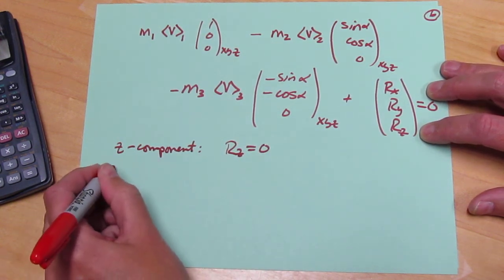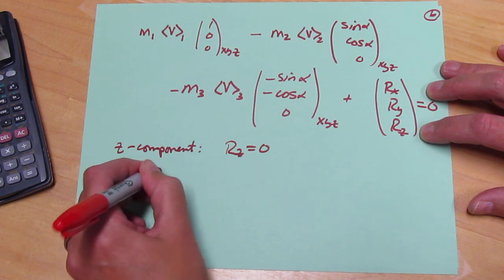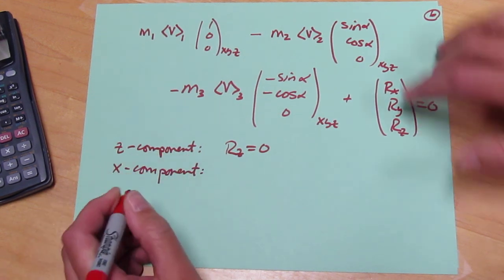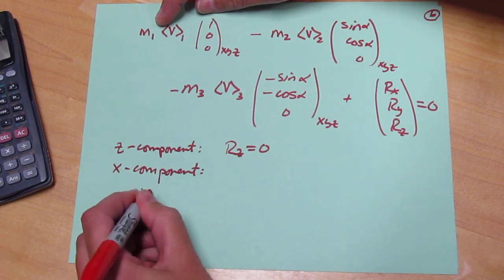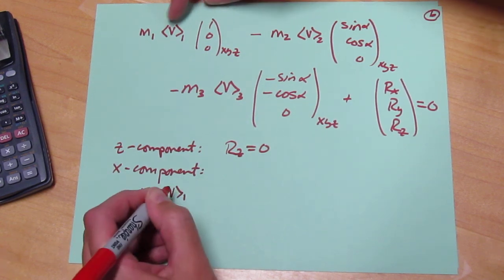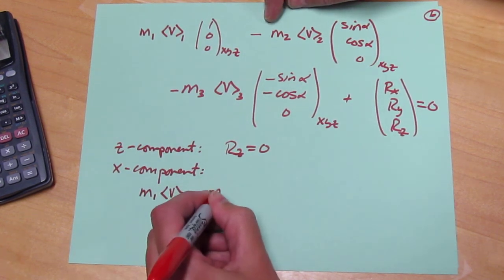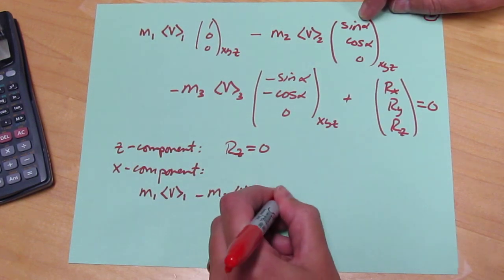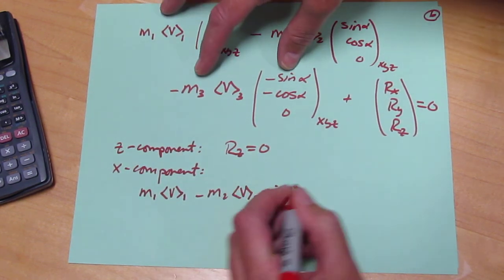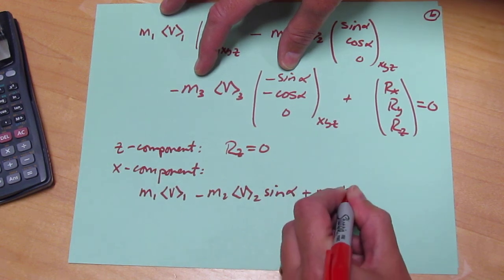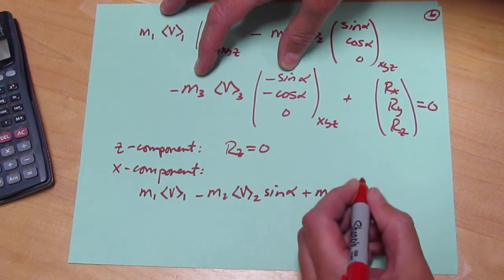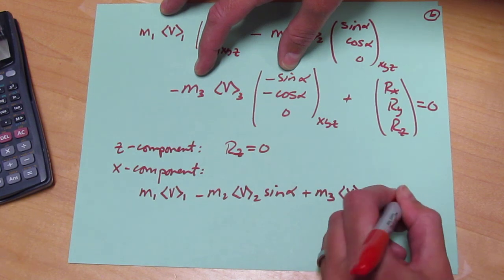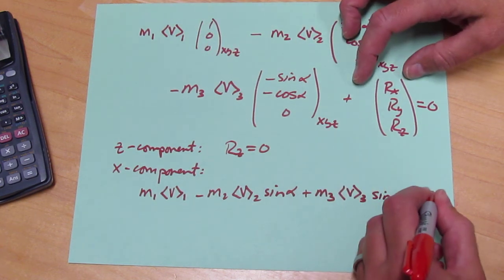We can look at the X component. And we see that M1V at surface 1 minus M2V at surface 2 times sine of alpha plus M3V at surface 3 sine of alpha is equal to minus Rx.